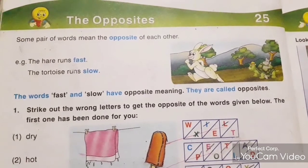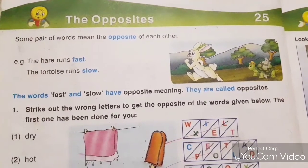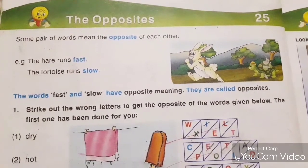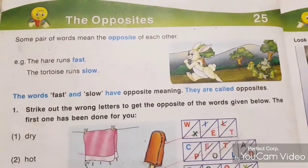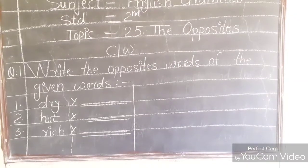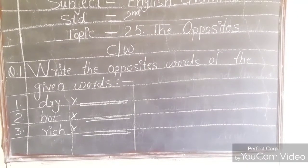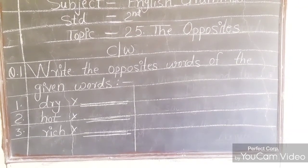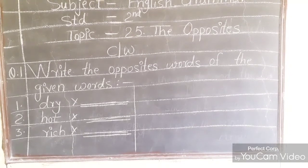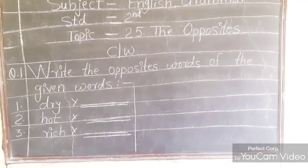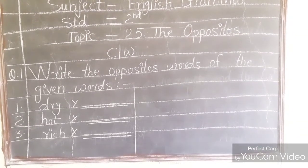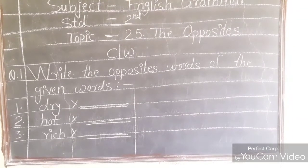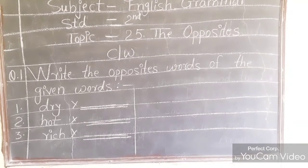With the help of the grammar workbook, I explained this lesson. Now, with the help of the blackboard, I am going to give you question and answer. Look at question number one: Write the opposite words of the given words. A few words are given and you have to write their opposite words.